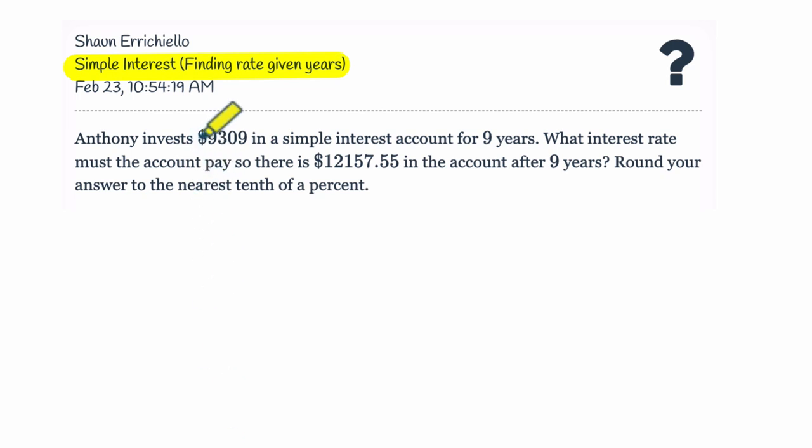Alright, let's read it. Anthony invests $9,309 in a simple interest account for 9 years. So right away, we're given the principal is $9,309. That's the amount we're putting into the account, and it's happening over 9 years, so it's staying in the account for 9 years. So T in years is 9.